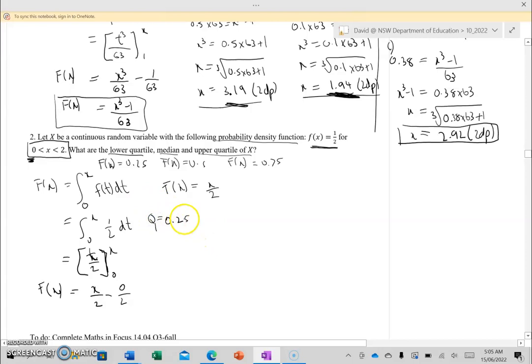Next, the median, which is Q2. We're going to set f(x) equal to 0.5, so X/2 times by 2—X will be 1, so that's my Q2 is 1. Then upper quartile: setting f(x), capital F of X, to be 0.75, we get that X is 1.5. So the upper quartile here is 1.5. For this distribution, Q1 is 0.5, Q2 is 1, and Q3 is 1.5.